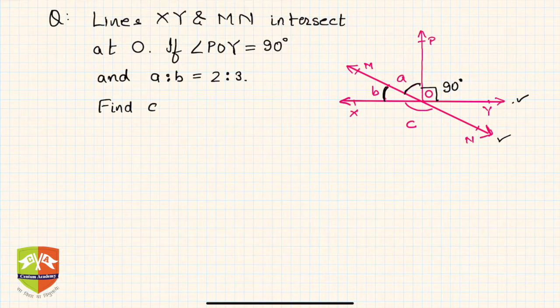The moment I see 90 degrees and ray OP stands on line XY, the first thing which comes to mind is you can use linear pair over here. So let's start the solution.